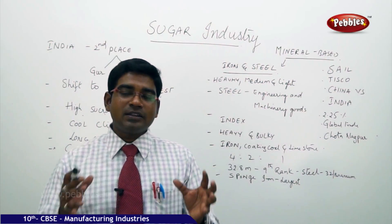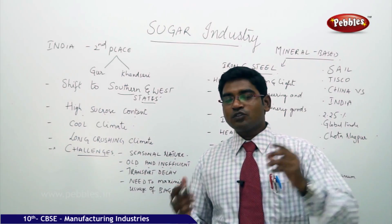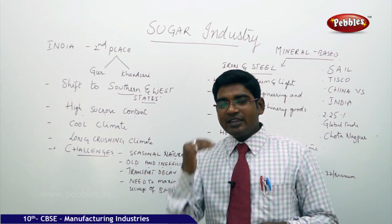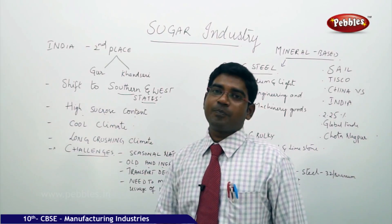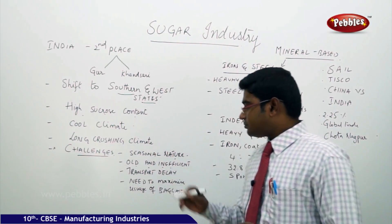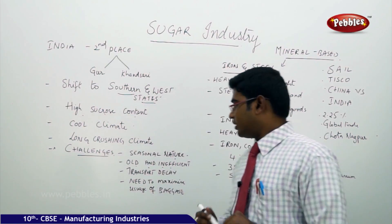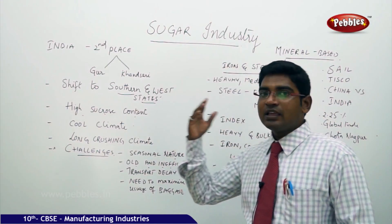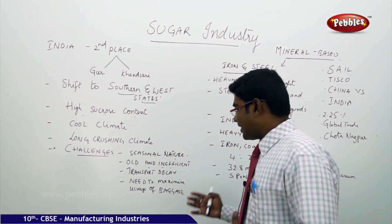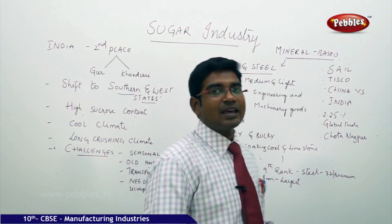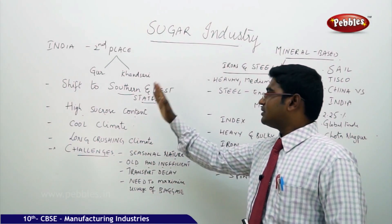When sugarcane is transported over long distances, the sucrose content present in the cane decays. If you buy a sugarcane in the morning and look at it in the evening, the edges start to shrink, indicating that the sucrose content is reducing — this is something we can observe naturally. When bulk sugarcane is transported for long distances, it results in a significant loss of sucrose. Transportation delay is therefore a major problem, which is also why the industry is moving towards other regions and needs to maximize the use of the bagasse system.